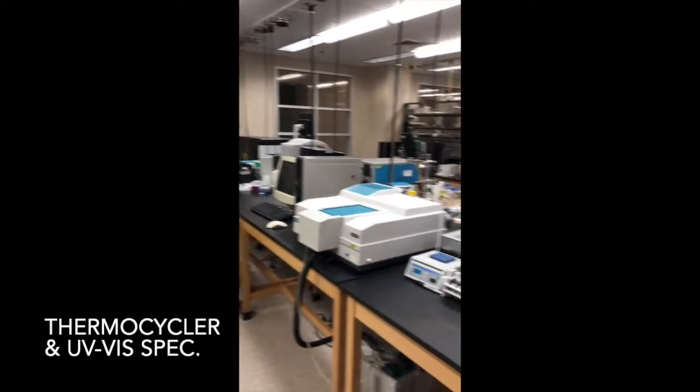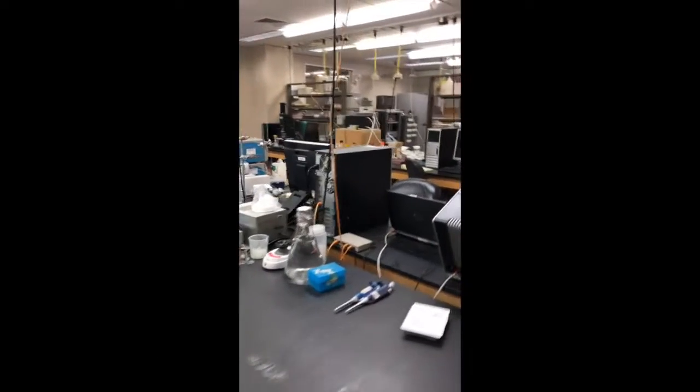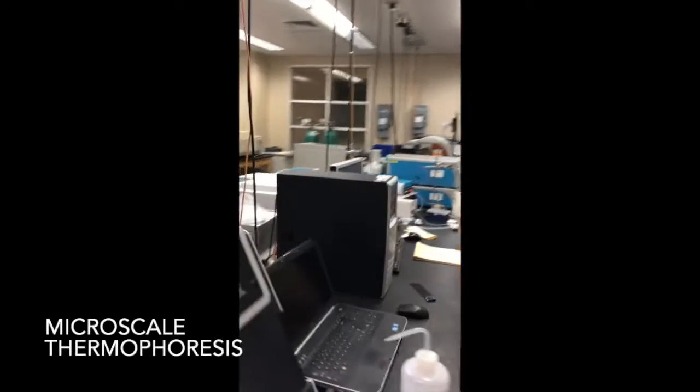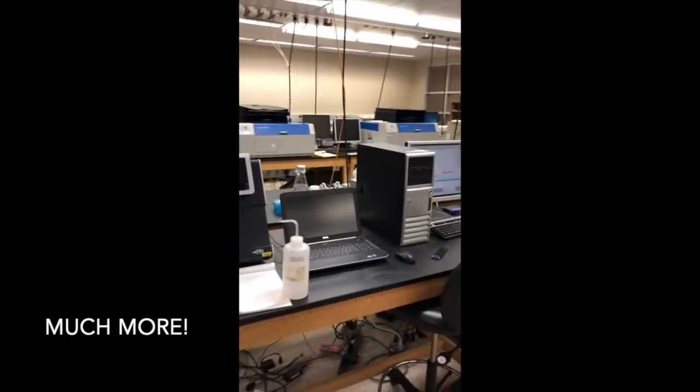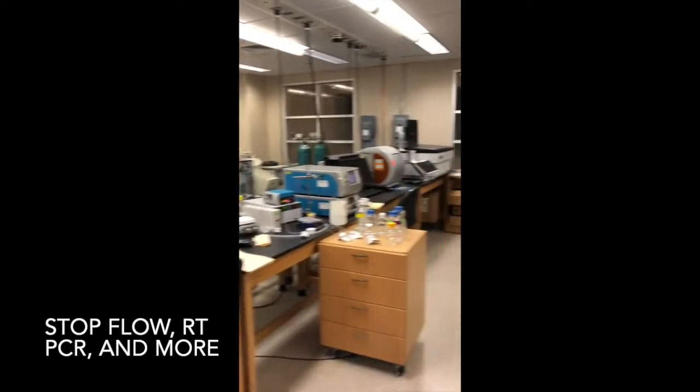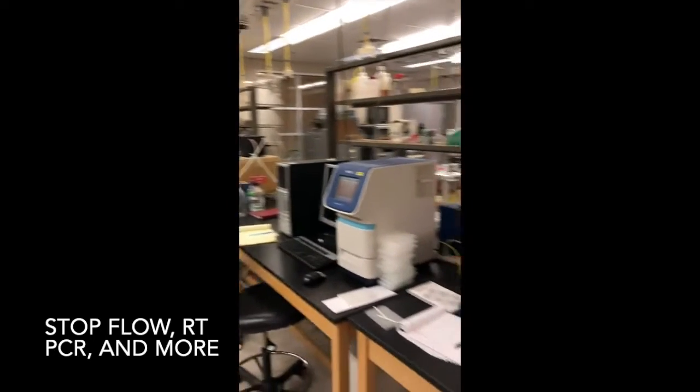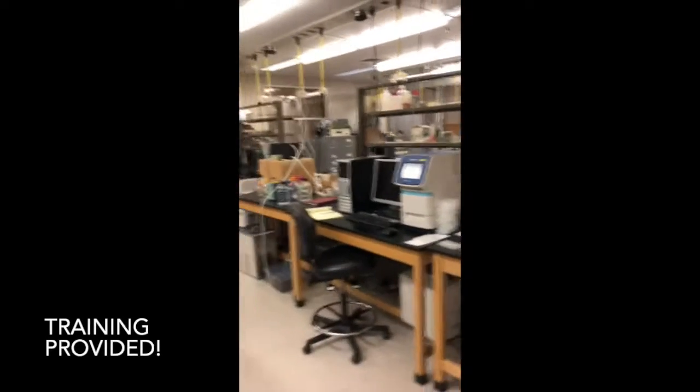On the opposite side we have thermal cyclers. There's a UV vis that we use regularly. Instrument here for microscale thermophoresis. Nice for doing binding measurements. A few other instruments including a stop flow on the other side and an RT-PCR instrument there.